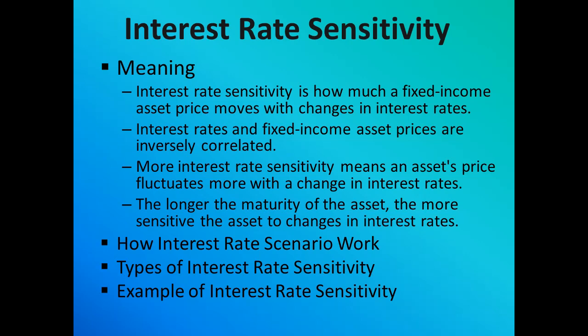The fourth type is key rate duration, which determines a fixed income security or portfolio's duration at a specific maturity on the yield curve. As an example of interest rate sensitivity, one widely used measure is effective duration. Assume a bond mutual fund holds 100 bonds with an average duration of 9 years and an average effective duration of 11 years. If interest rates increase by 1%, the bond fund is expected to lose 11% of its value. Similarly, a corporate bond with a maturity of 6 months and a duration of 2.5 would see its price rise by 1.25% if interest rates fall by 0.5%.